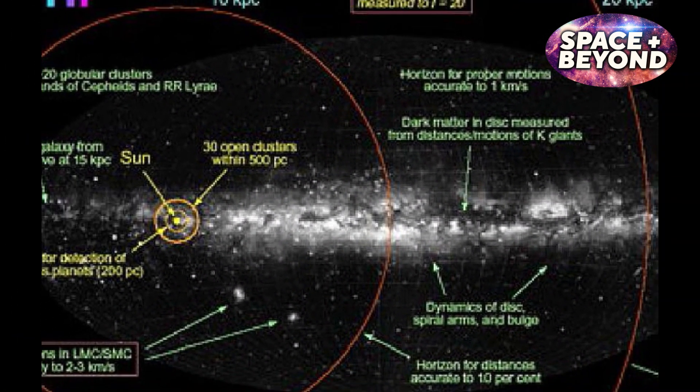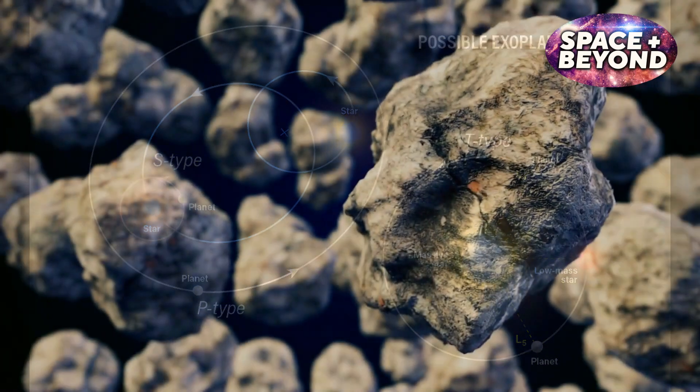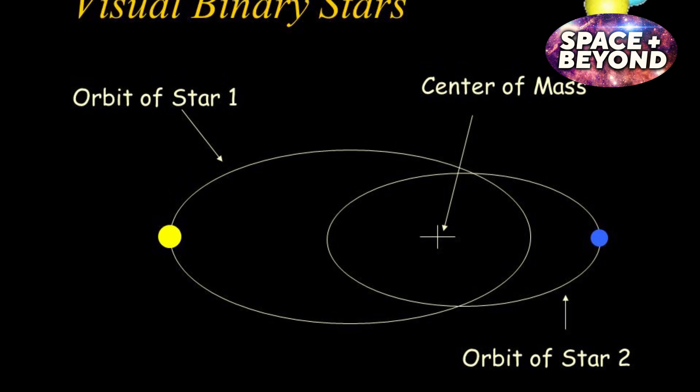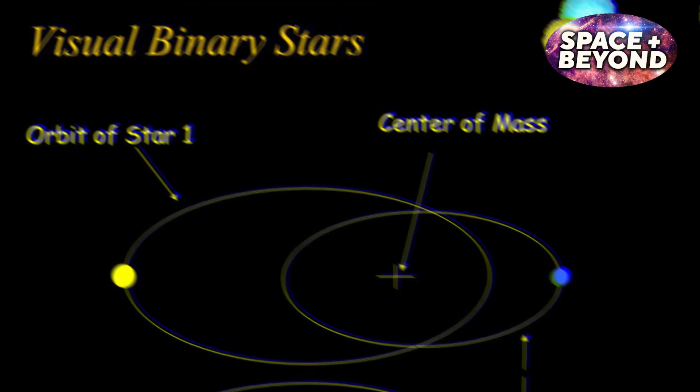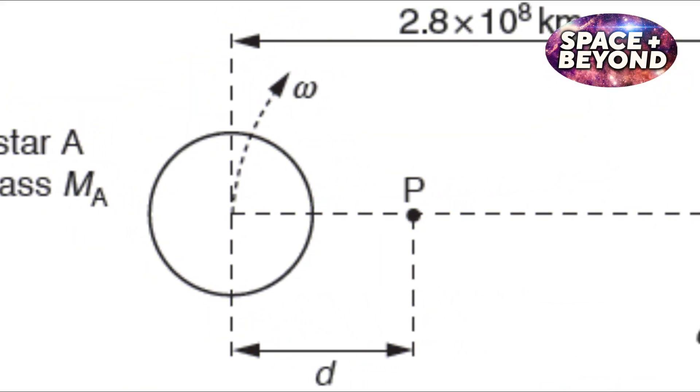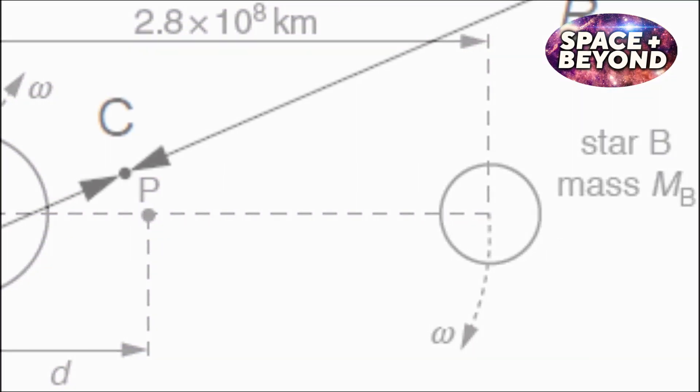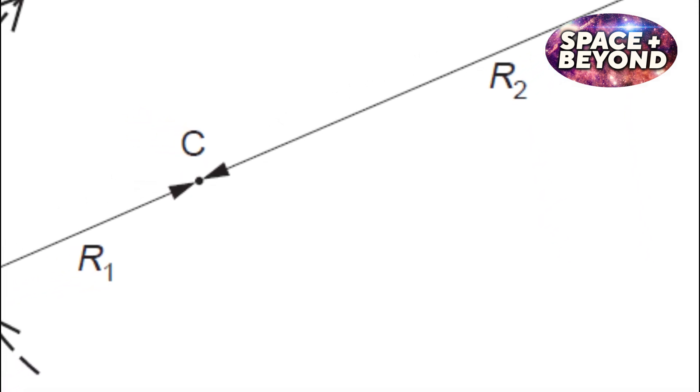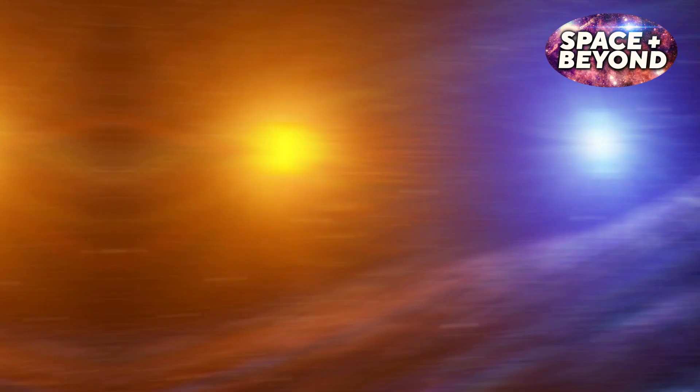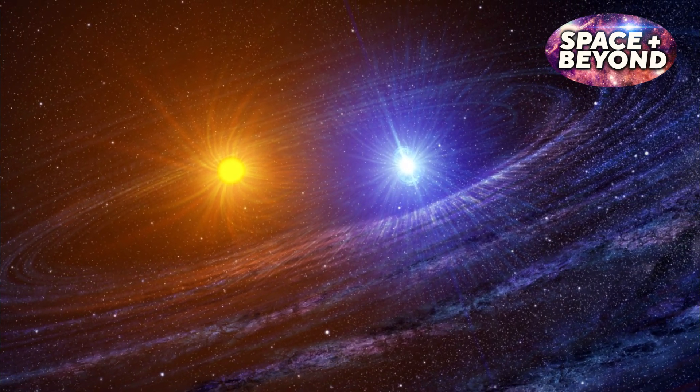The latest data released from Gaia includes information on binary star systems and solar system asteroids. Binary stars are two stars orbiting a common center of mass, such as the Alpha Centauri A and B pair. The measurements from this data release include distances between the stars, their orbital periods, and even their masses.